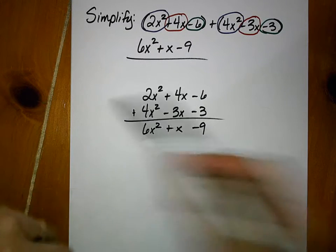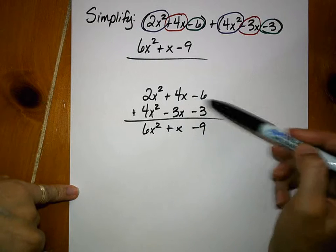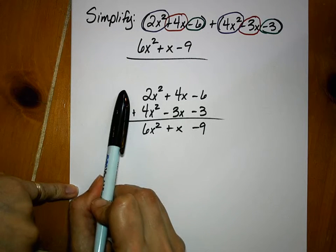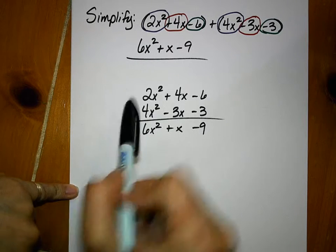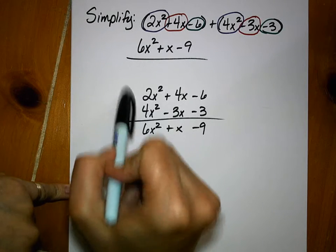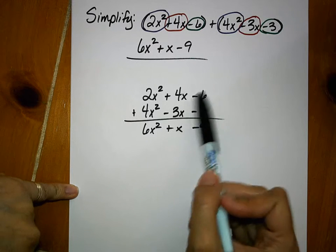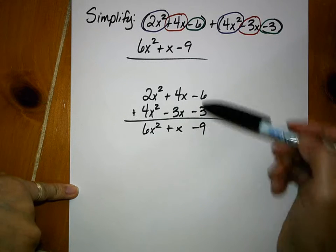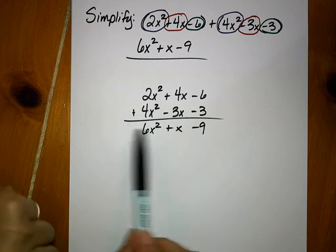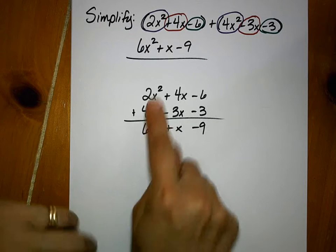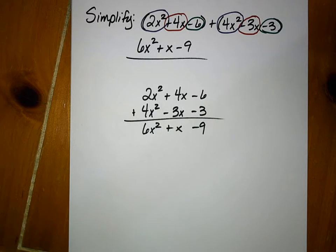This method gets a little tricky when the polynomials don't line up. For instance, if you had an x cubed term on here and nothing on the bottom, it would just be sitting there floating on top and you'd be adding 0 to it and bringing it down. Okay, or maybe if you didn't have this term at all, you would just be bringing down the negative 3. So this gets a little tricky when you have to line them up and the terms don't always have exactly the same exponents.